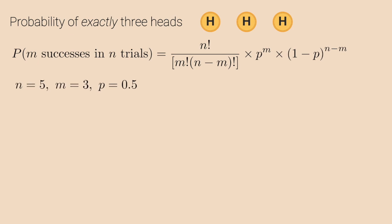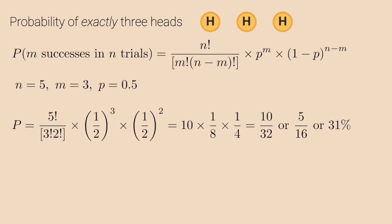For example, let us use this distribution to calculate the probability of getting exactly 3 heads in 5 flips. We have n equal to 5 and m equal to 3, and odds of getting heads is p equal to half. Therefore, the probability here is 10 by 32 or 5 by 16 or 31 percent, which is same as before.